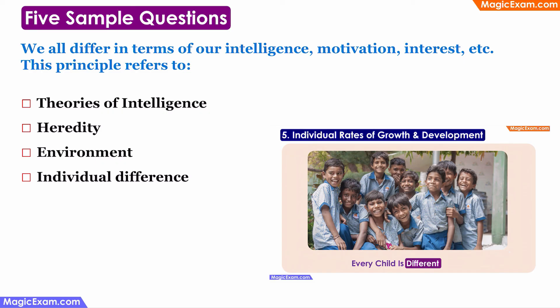The last question states: we all differ in terms of our intelligence, motivation, interest, etc. — this principle refers to which of the following? We studied that every child is different because we all have individual rates of growth and development. The rate of development of every child will be different. Therefore we are talking about individual differences, and that is the correct answer.